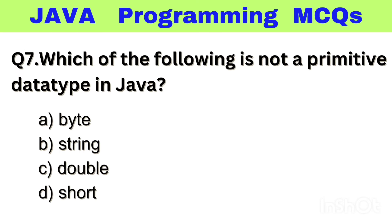Question number 7. Which of the following is not a primitive data type in Java? Option A: Byte, B: String, C: Double, D: Short. The right answer is option B, String.